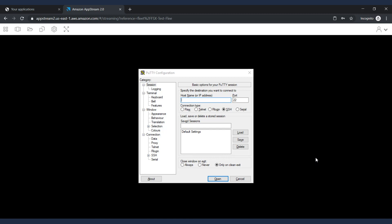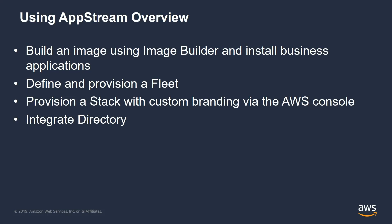The process to use AppStream has four basic steps. First, you build your image using the Image Builder tool — you use it to build an image and install your applications on it. The next step is to deploy your fleet, which is a set of server instances running that application, and you can configure it to autoscale up and down based on your needs. Then you build a stack, which holds some configuration for the application.